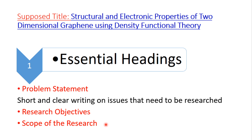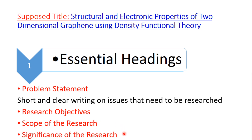Then we have scope of the research, which defines the boundary of the research. For example, since this proposal is about structural and electronic properties, optical properties are outside its scope. After scope, one should write about the significance of the research — why you are carrying out this research and why it has importance.